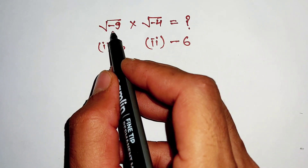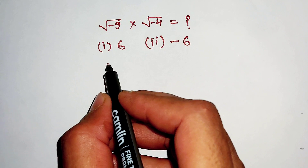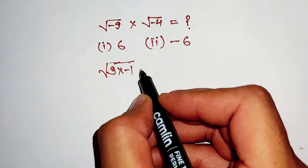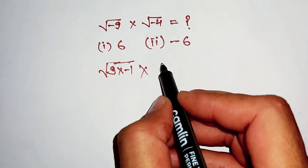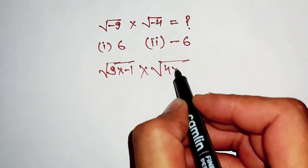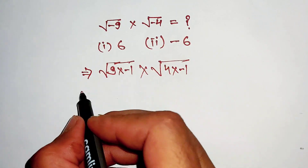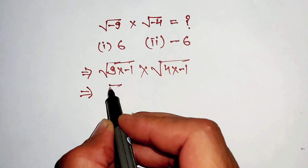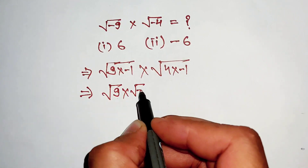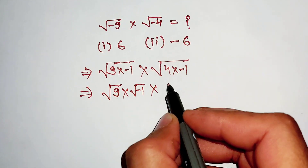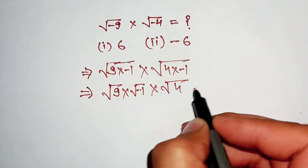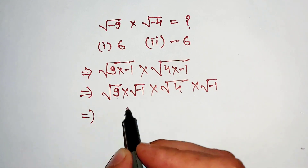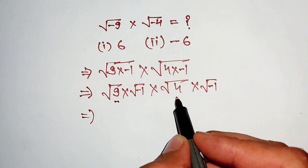First of all, we can rewrite this term, and same like this. Now further we can rewrite this term like this, and this like this. Now multiply this number and this number.